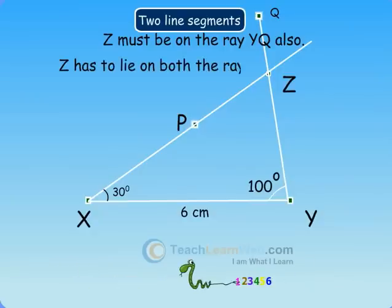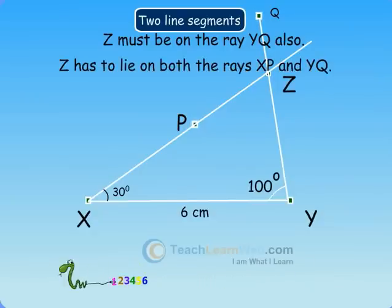Z has to lie on both the rays XP and YQ. So, the point of intersection of the two rays is Z.